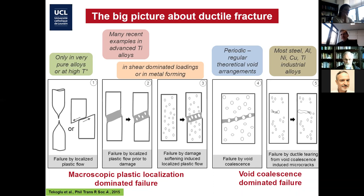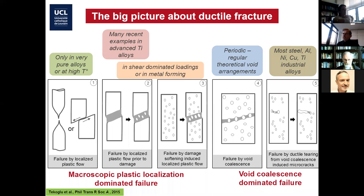In between, you have a range of combinations and complications. For instance, case number two is where, because of low strain hardening capacity or certain loading conditions, you may generate plastic localization, and within the necking or shear band, due to large strains and increased triaxiality, voids form that are responsible for fracture. But the opposite is also true: sometimes damage nucleates very early, and the softening induced by the voids accelerates localization, making the process very complicated to monitor and understand.